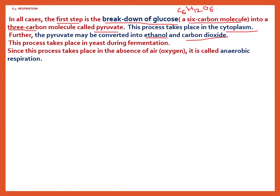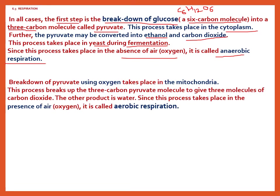Further, the pyruvate may be converted into ethanol and carbon dioxide. This process takes place in yeast during fermentation, and since it occurs in the absence of air, it is called anaerobic respiration. Breakdown of pyruvate using oxygen takes place in mitochondria, breaking the three-carbon pyruvate into carbon dioxide, water, and energy. Since this occurs in the presence of air, it is called aerobic respiration.